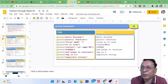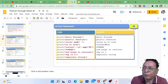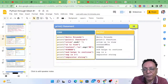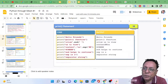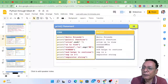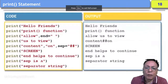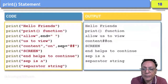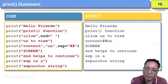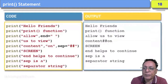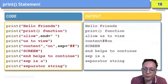The print statement is very simple. The generic meaning of print is: if you want to print anything on the screen, use the print statement. Print requires two optional parameters: `end` and `sep`. These two parameters are optional — it depends on the user whether they want to use them in the program or not.